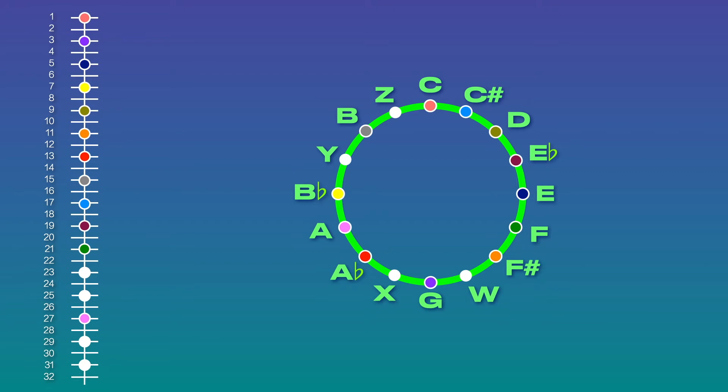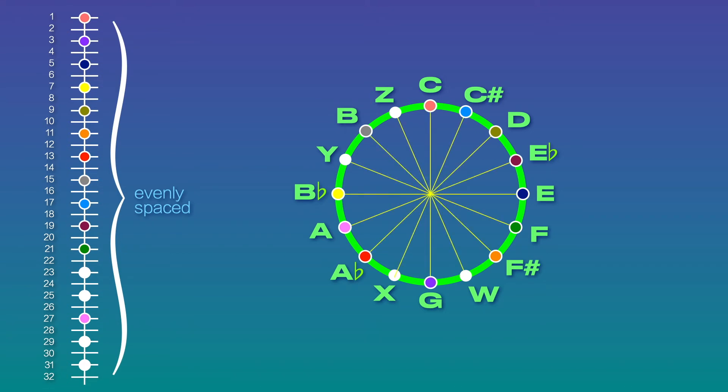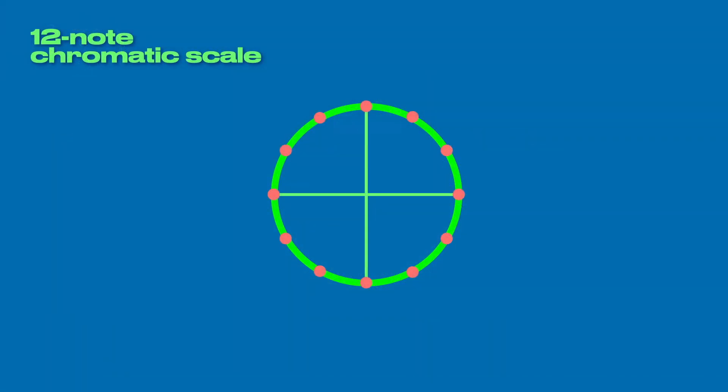Now we have every note accounted for, and because of this, each note is evenly spaced. What we've essentially done here, in making our circle correspond to the harmonic series, is that we've moved from a 12-note scale to a 16-note scale.